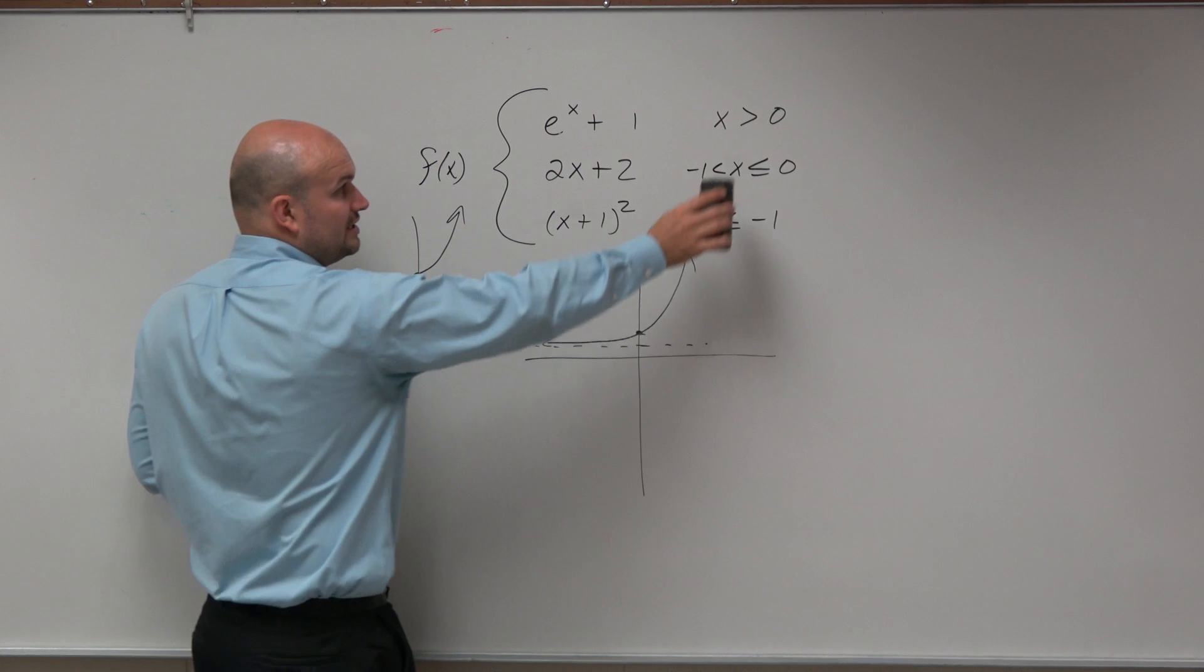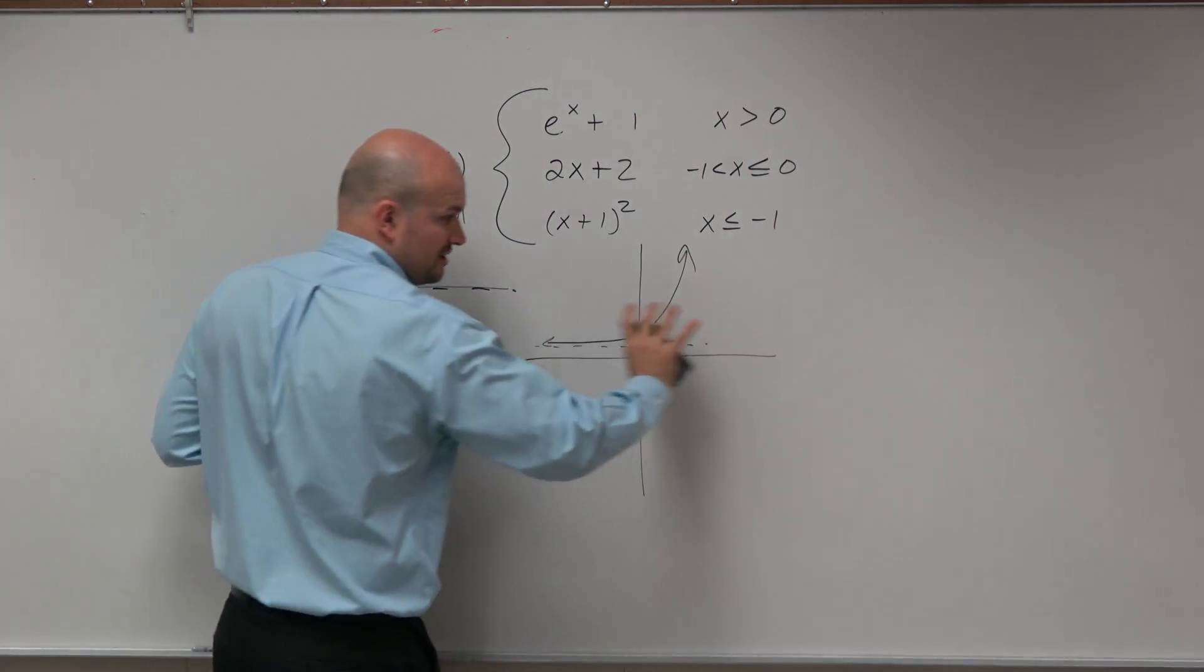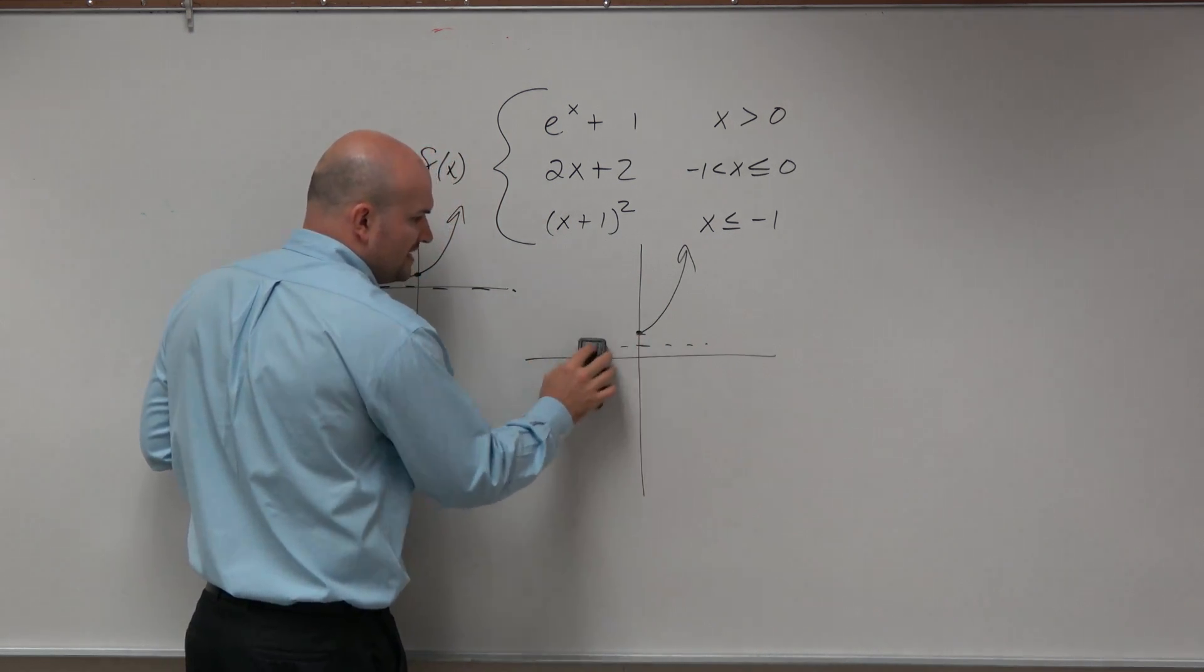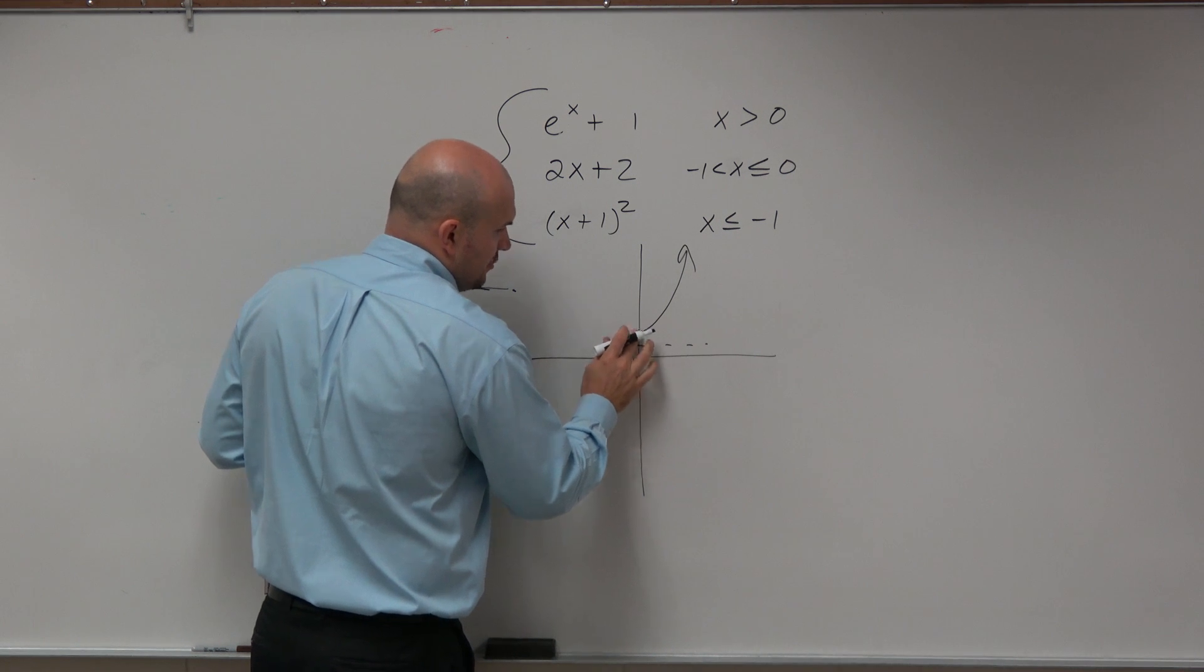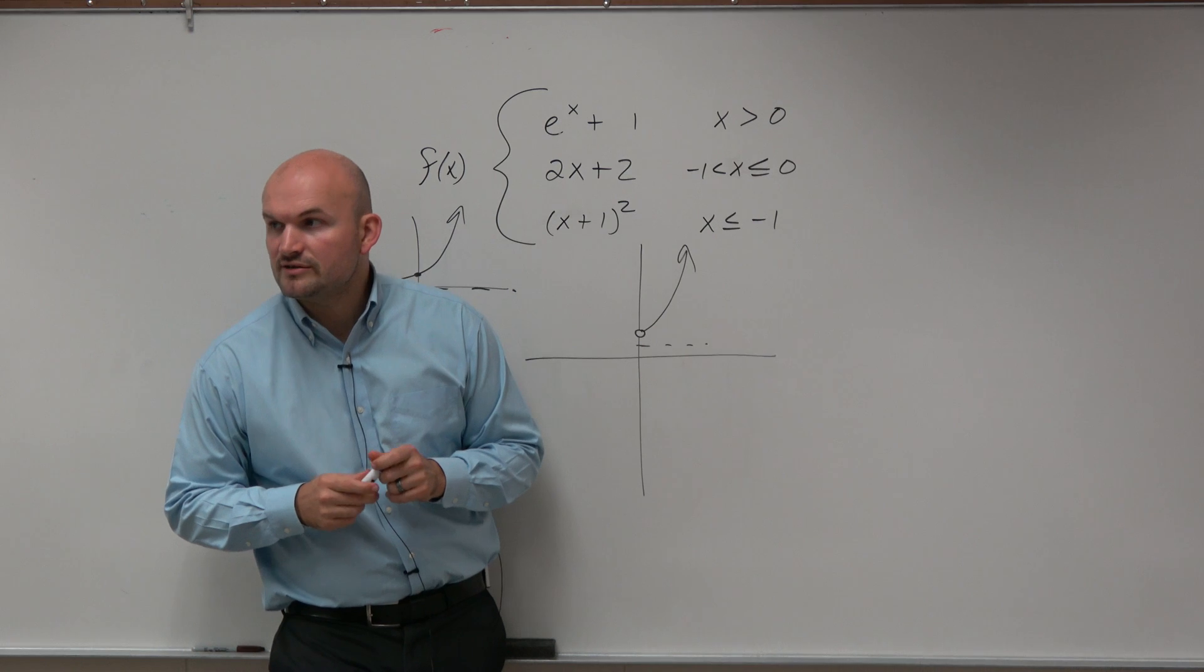Now this says only graph this function for x is greater than 0. So x is greater than 0 is only positive x values, so I'm going to delete all of this. And I'm going to make this a nice hole.